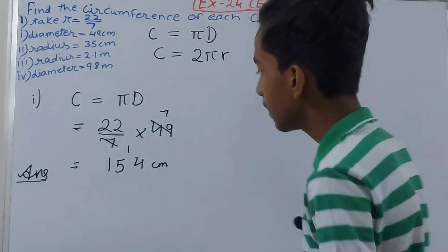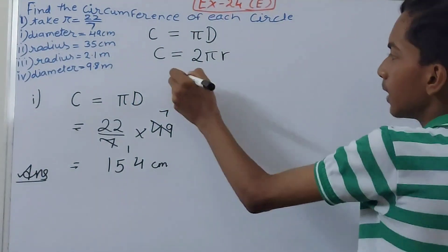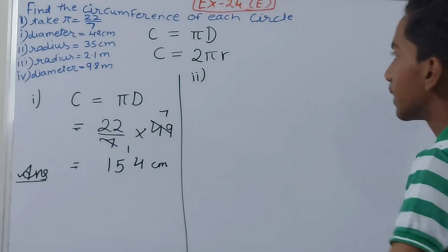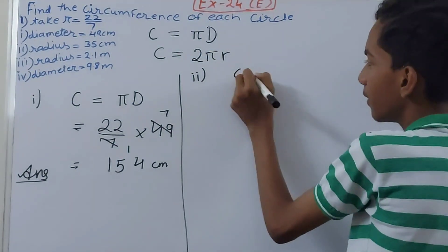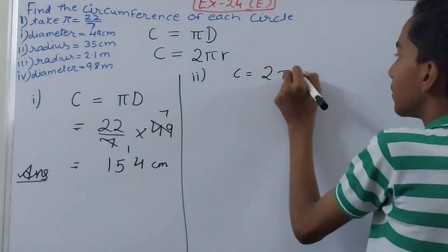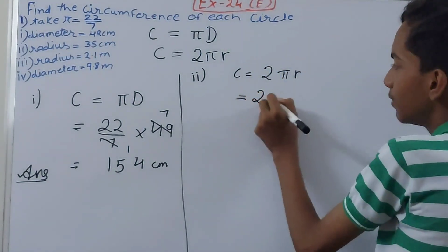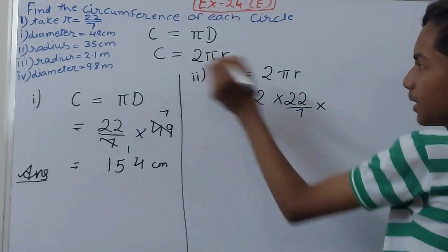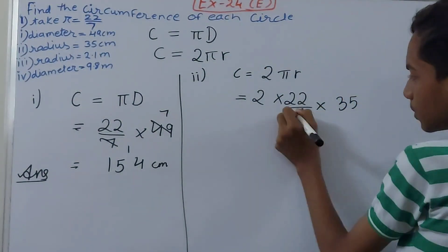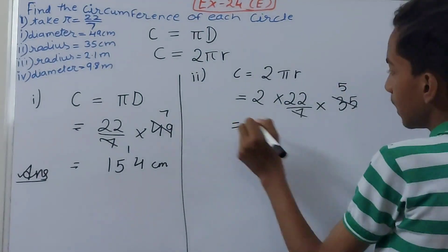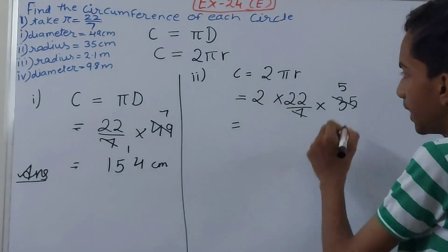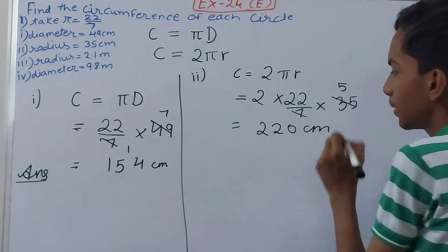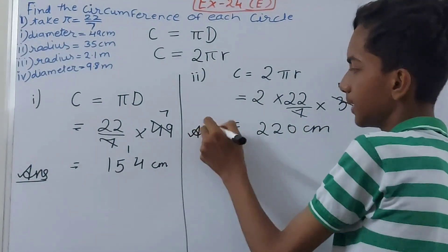Second one: radius is given as 35 centimetres. Since radius is given, we use C = 2πr. So circumference equals 2 into (22/7) into 35. Cancelling 7 and 35 gives 5, then 5 into 2 is 10, and 10 into 22 is 220 centimetres. That is the circumference in the second part.